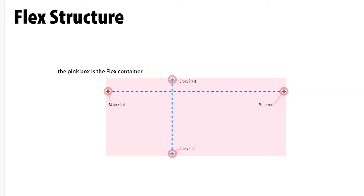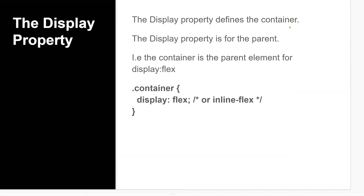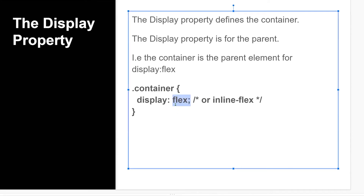The structure of the flex container has coordinates: you have a main start going from left to right, a main end, and then the vertical section called the cross axis, which has a cross start and a cross end. When you create that display property you're going to want to use either flex or you can use inline-flex, but basically just using flex will work.